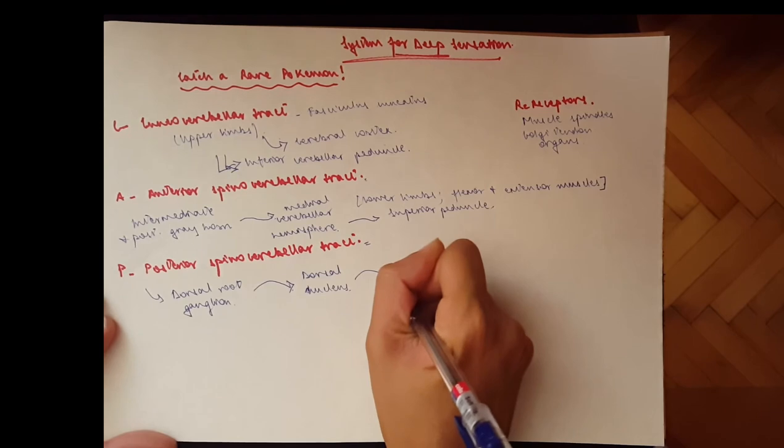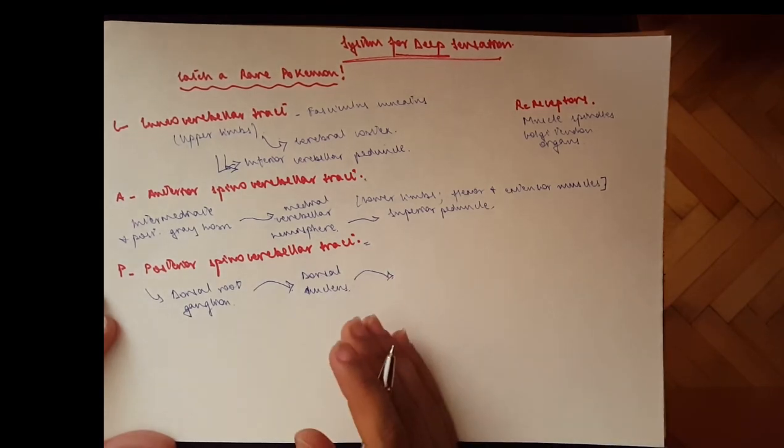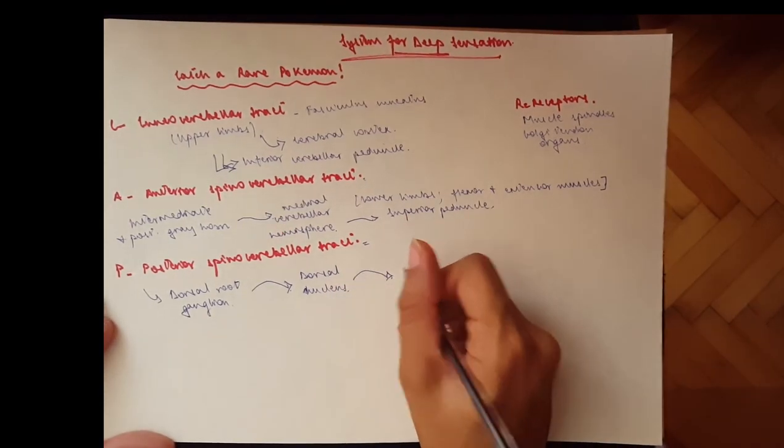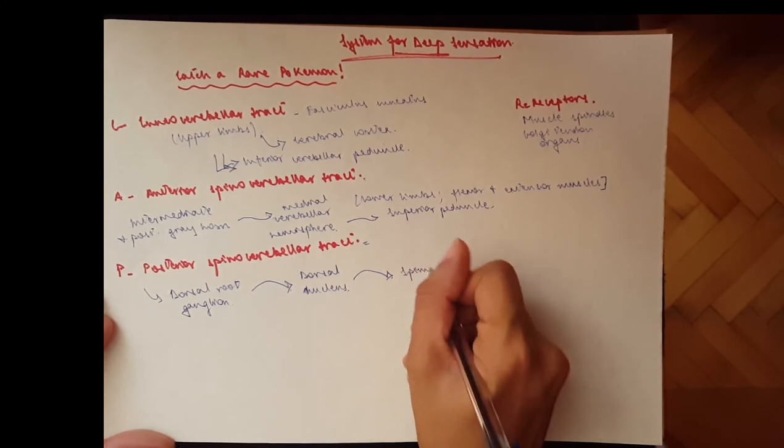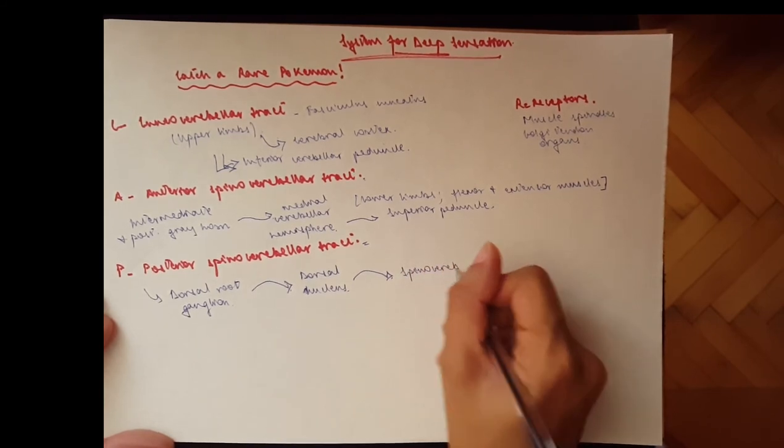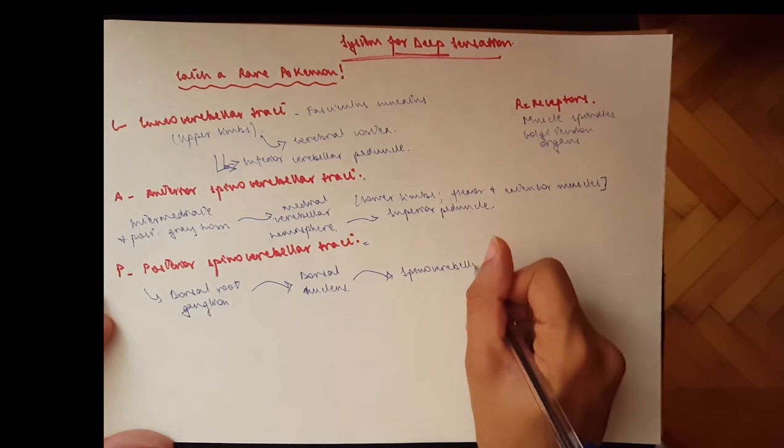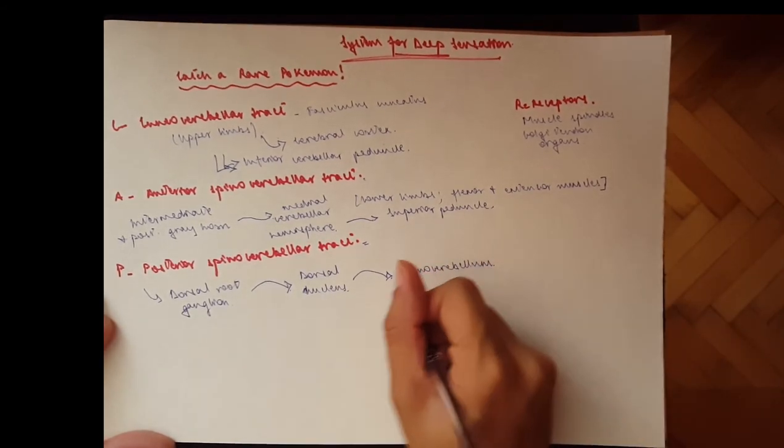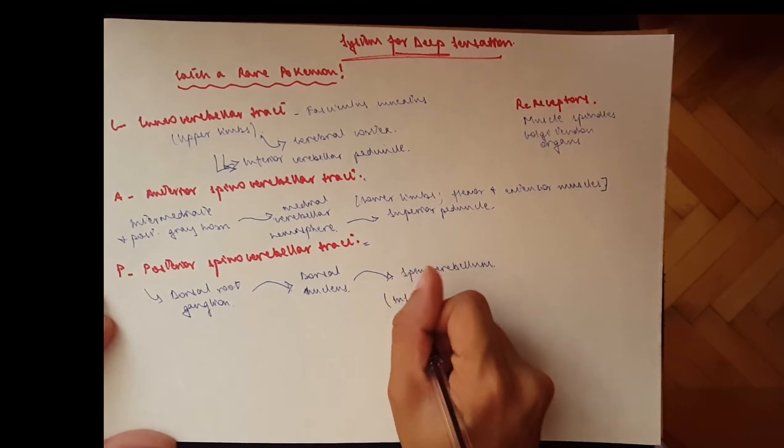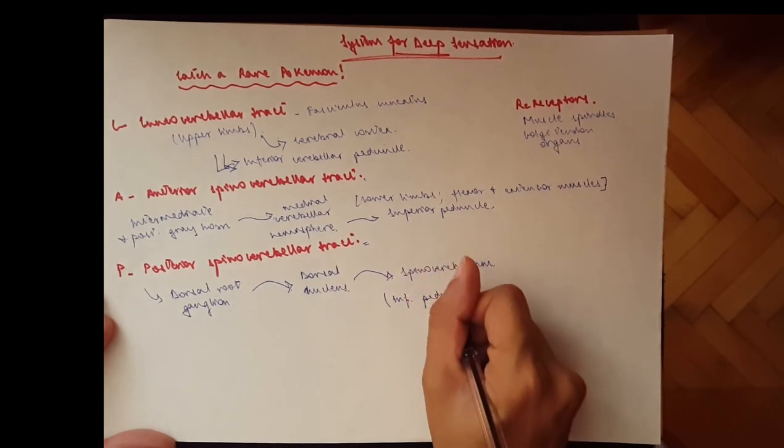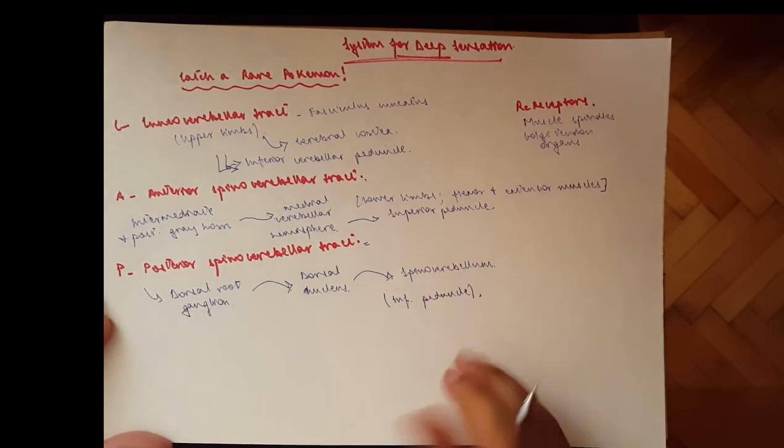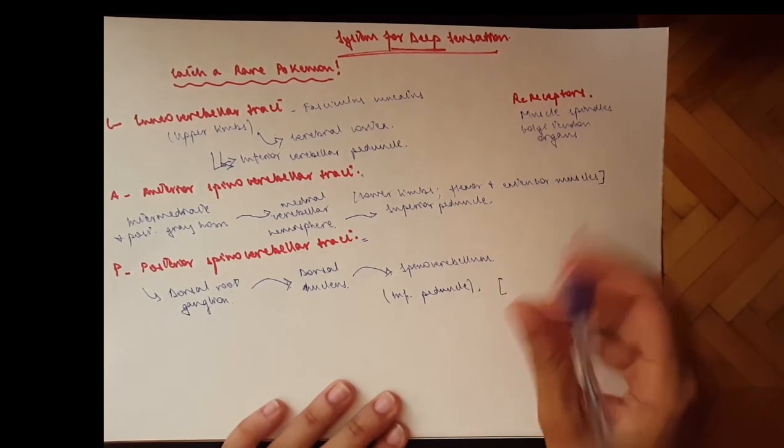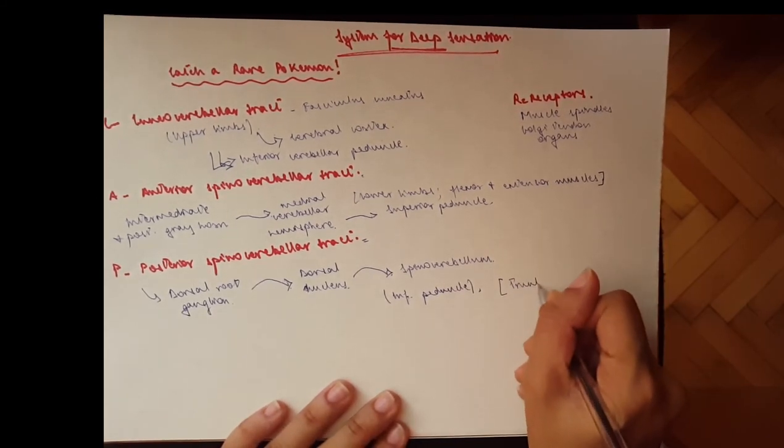From here it goes on the ipsilateral side to the cortex of the spinal cerebellum. Now the spinal cerebellum consists of the vermis and the medial hemisphere. So this is where it goes, and it goes at the level of the inferior peduncle. And it carries from the trunk and the lower limbs.